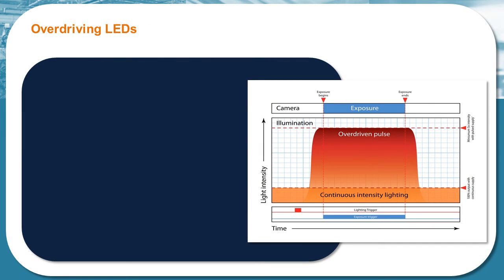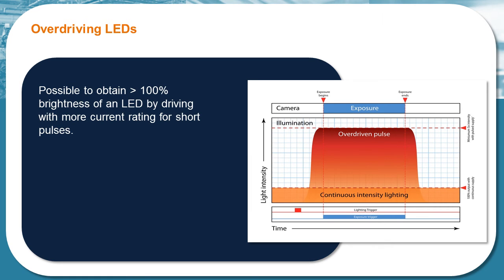When considering overdriving LEDs, it's worth noting that most machine vision systems are short of light, and often more light would give more accurate results or allow the system to run faster. At their specified current rating, LEDs and LED lights output 100% brightness. However, it is possible to obtain more than 100% brightness by driving with more current rating for short pulses.